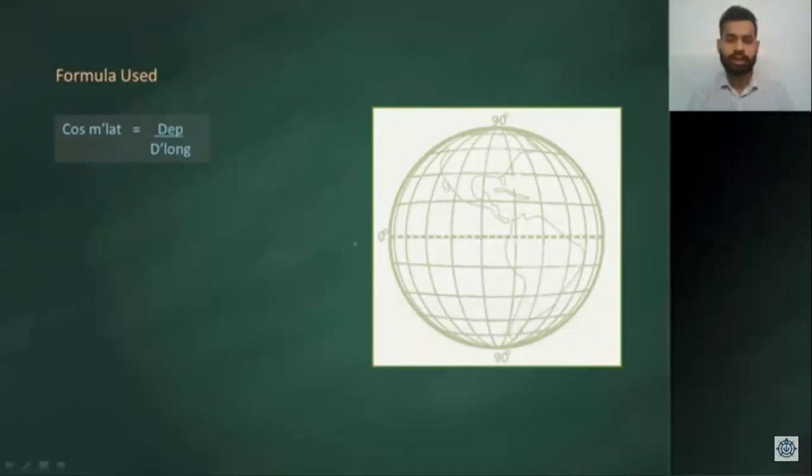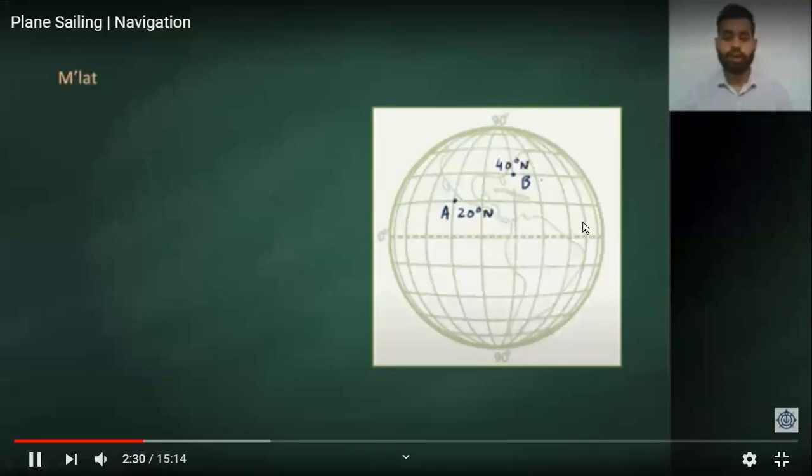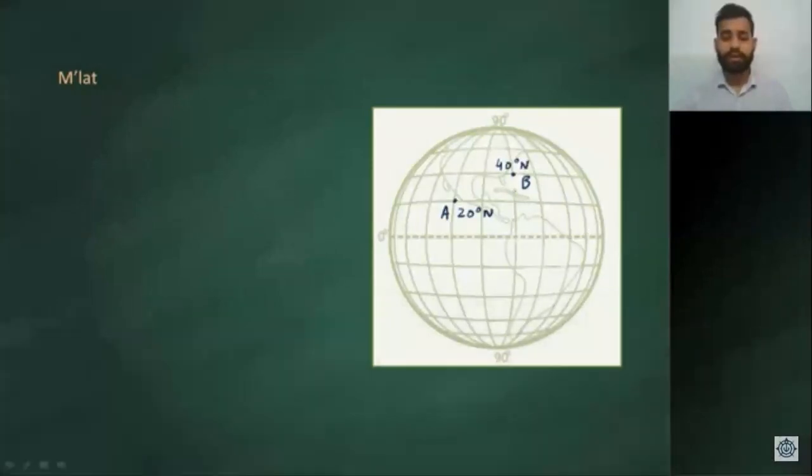Cos m lat is cos mean latitude, that is middle latitude of A and B. So A is on 20 degrees and B is on 40 degrees, so middle is 20 plus 40 equals 60 divided by 2, which is 30 degrees. So 30 degrees is the mean latitude.